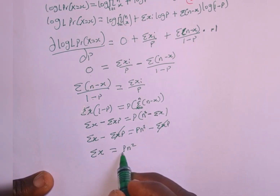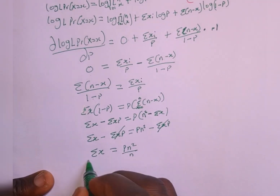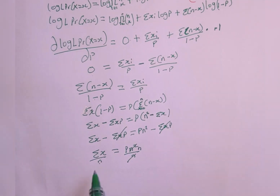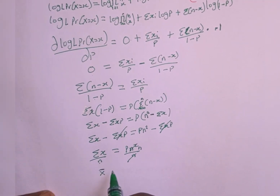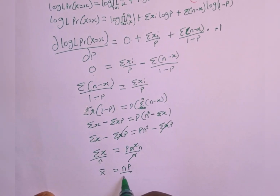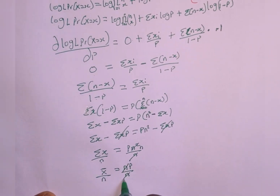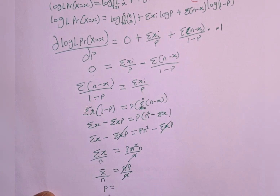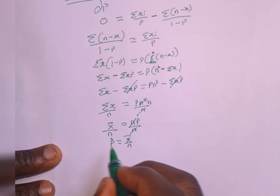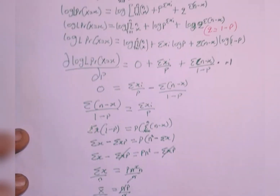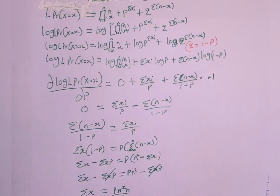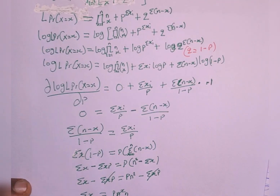Since we're looking for the value of p, we divide both sides by n twice. Summation of x over n is x-bar (the mean), which equals np. Dividing again by n gives p equals x-bar over n. Therefore, the maximum likelihood estimate of p is p-hat equals x-bar over n. This is the maximum likelihood estimator of a binomial distribution. Thank you for watching, and please don't forget to subscribe to our channel for more videos like this.